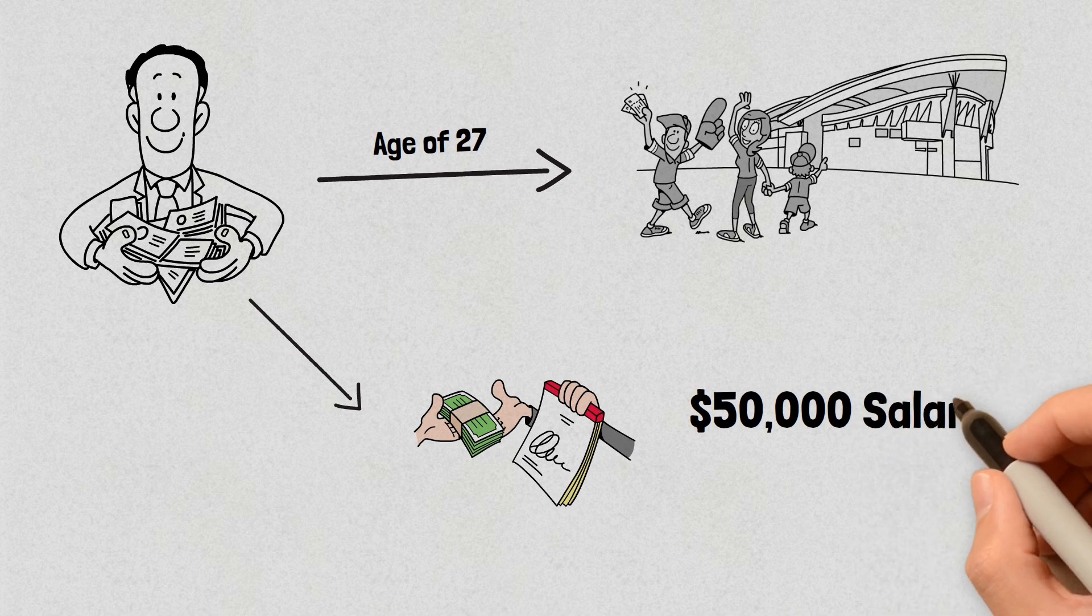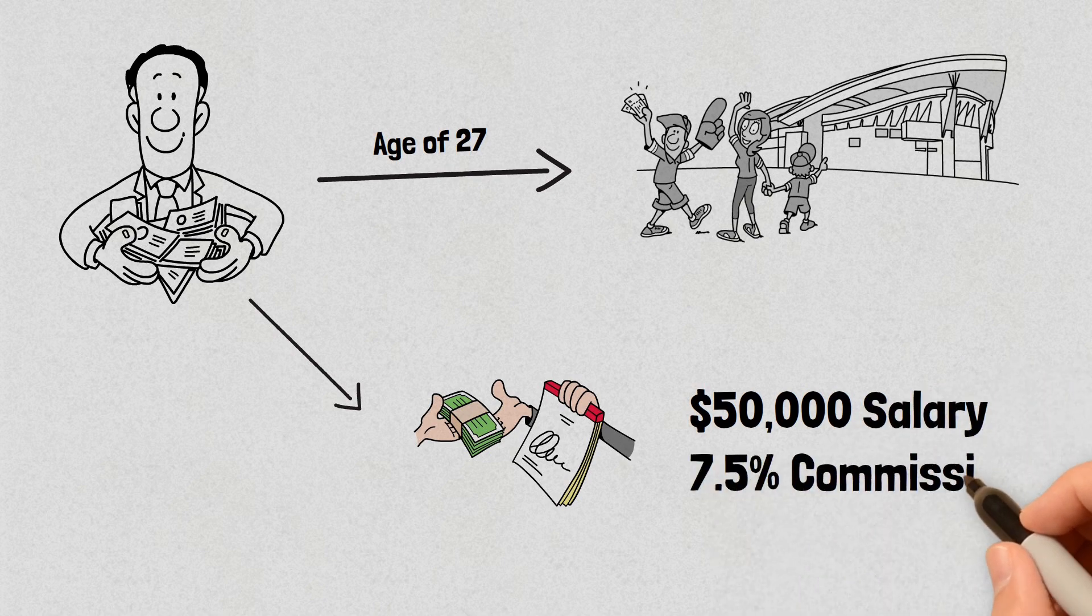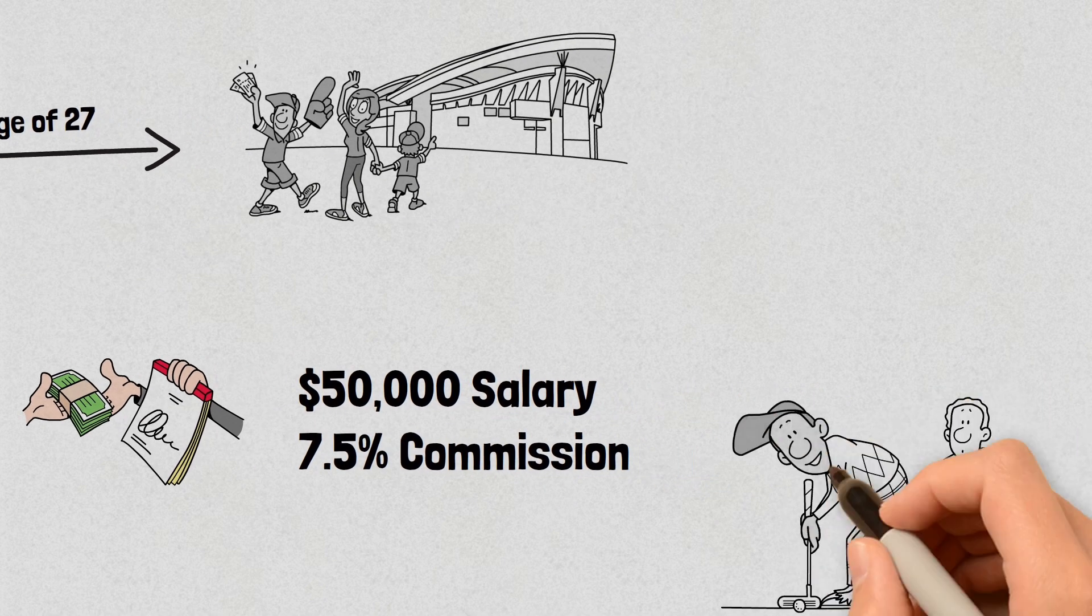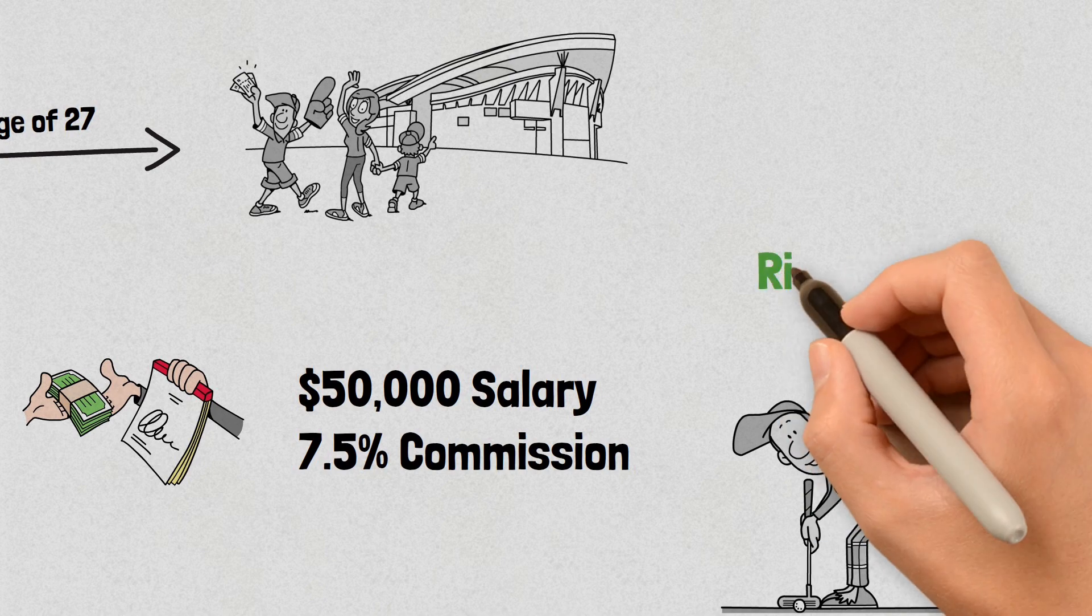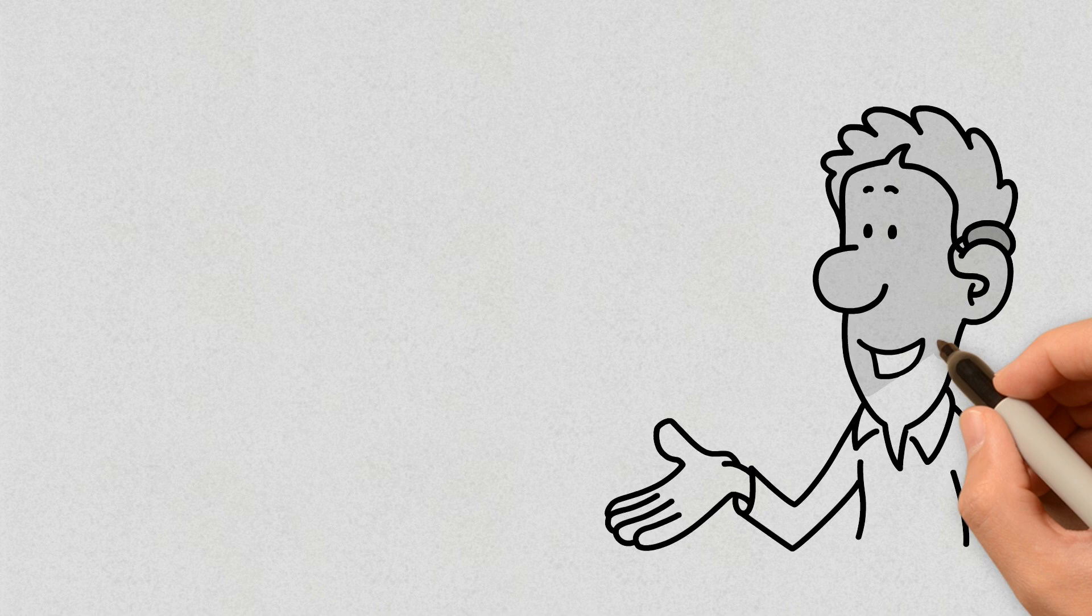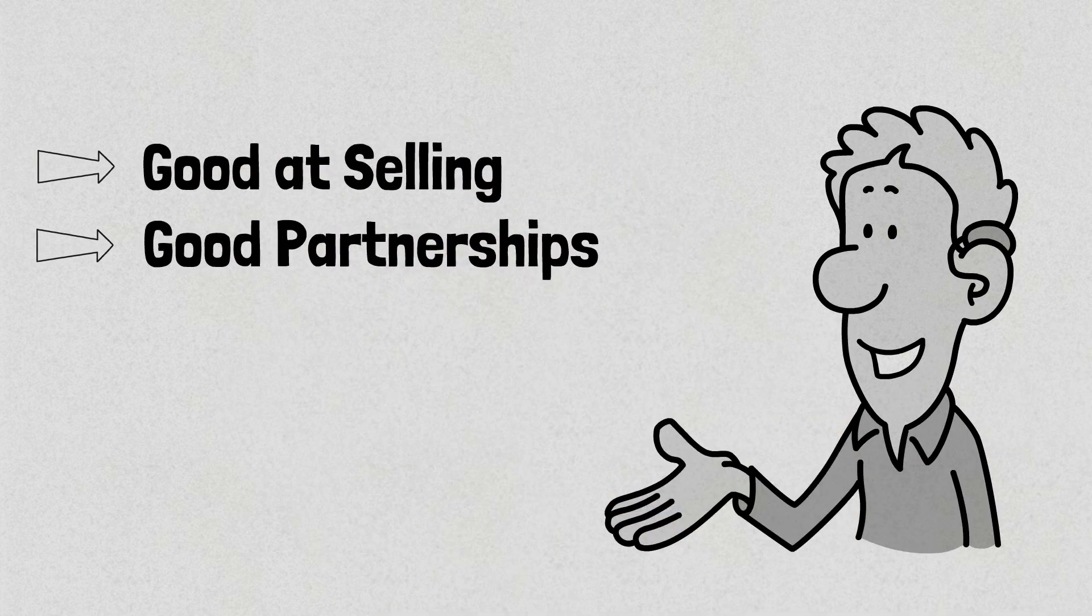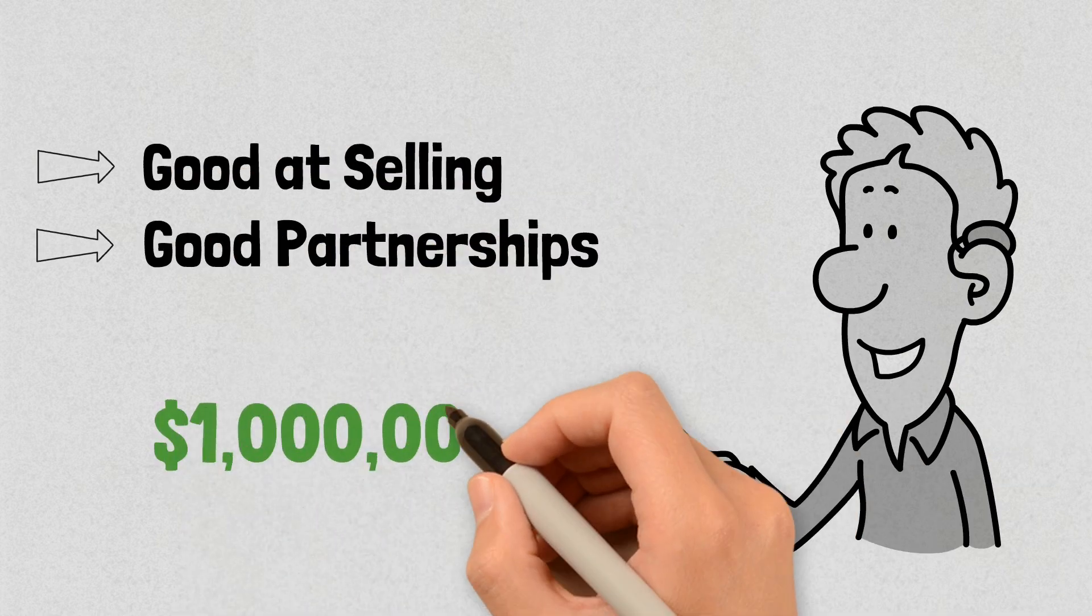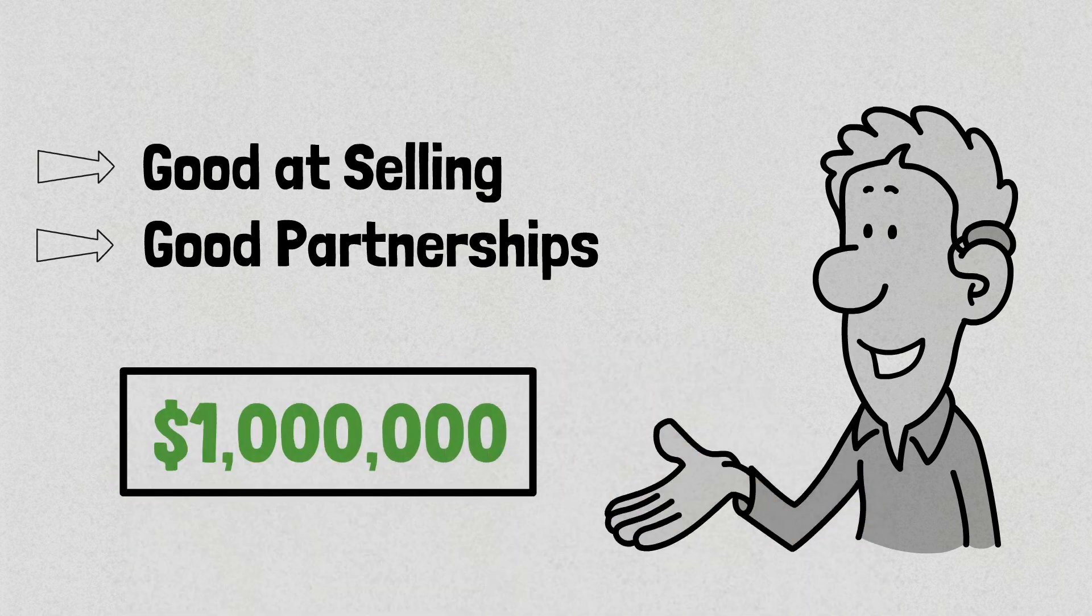He got a basic salary of $50,000 and made a 7.5% commission on clients who were getting contracts worth $73 million. So if you're able to position yourself as someone who is good at selling and partnering with the right people, it's very practical to make your first $1 million super fast.